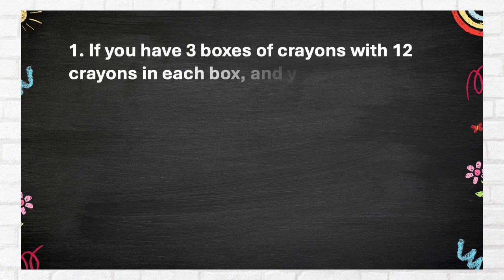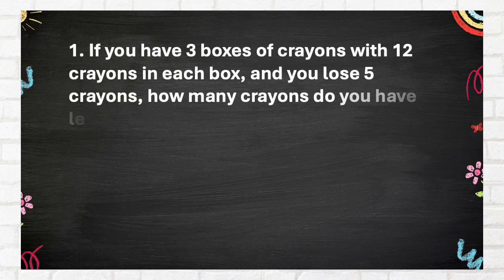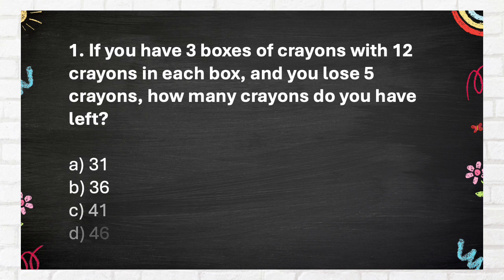If you have three boxes of crayons with 12 crayons in each box, and you lose 5 crayons, how many crayons do you have left? Again, if you have three boxes of crayons with 12 crayons in each box, and you lose 5 crayons, how many crayons do you have left? A. 31. B. 36. C. 41. D. 46.